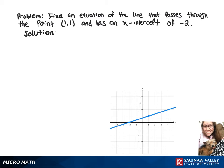To find an equation for this line, we can look at the point slope form y minus y1 equals m times x minus x1.